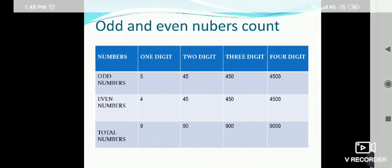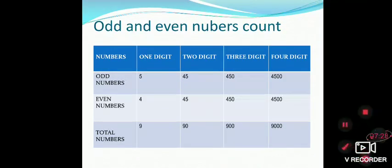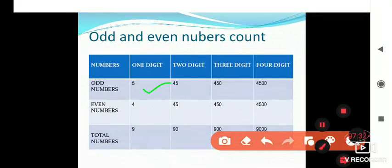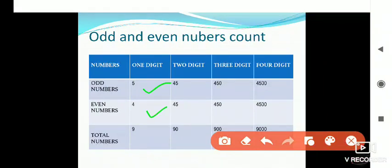Total one-digit numbers are 9. From those 9 numbers, 4 are even and 5 are odd.